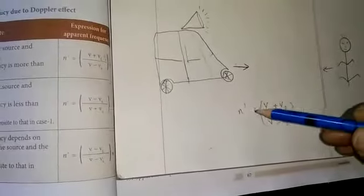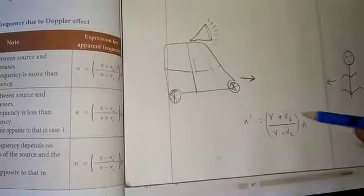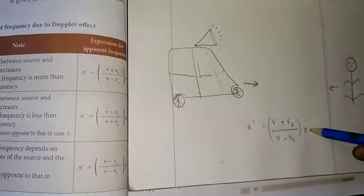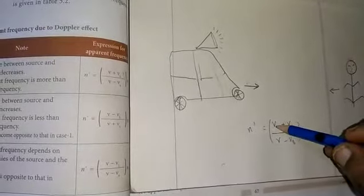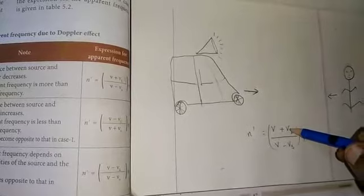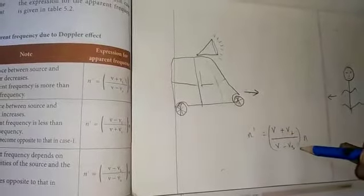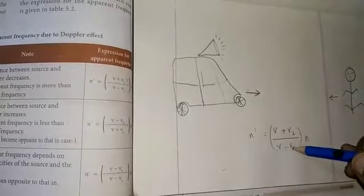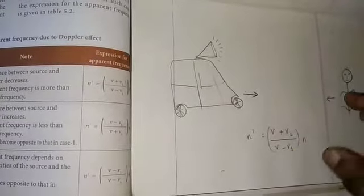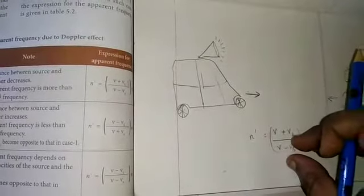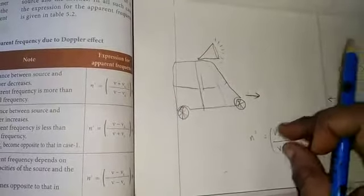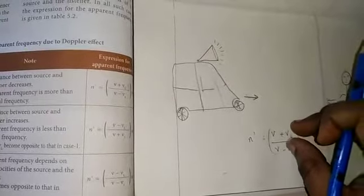So that's the only formula. N' is the apparent frequency and N is the real, original frequency. The velocity and speed is increased — listener's speed increases, source's velocity decreases. The source's original sound increases, listener's speed increases.